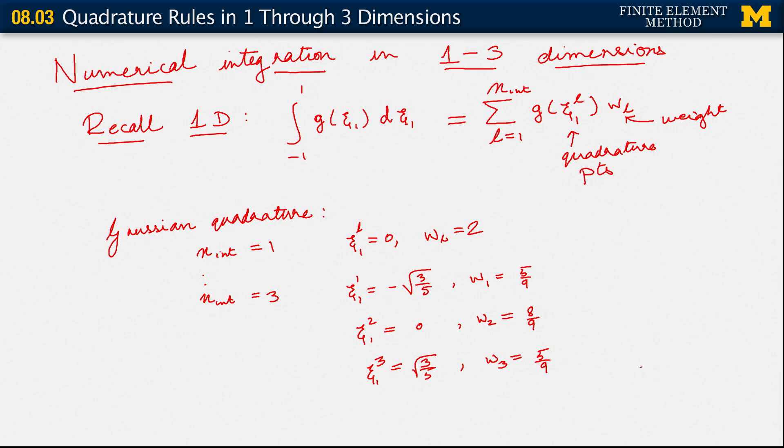And we saw that Gaussian quadrature said that an n_int point rule integrates a polynomial of order 2n_int minus 1 exactly. So we recall all this. What we are going to see is that when we go to multiple dimensions, it is essentially a tensor product idea, or a tensor product rule that holds on this basic idea. So let's go ahead and see how that works out.